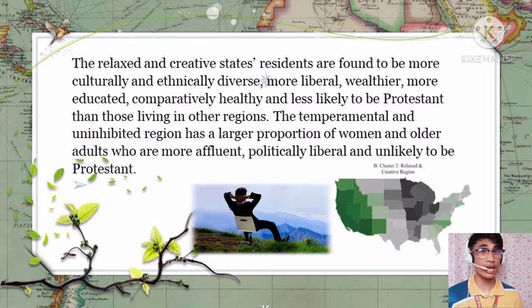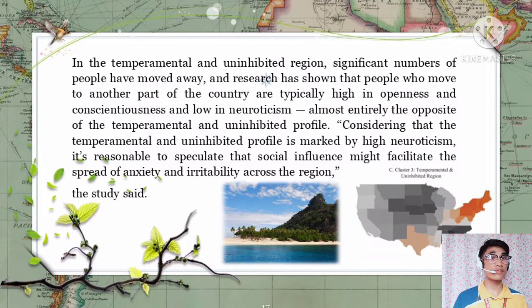For instance, research has shown that agreeableness is a trait often found in people who stay in their hometowns, and a large proportion of residents in the friendly and conventional region lived in the same state the year before. The relaxed and creative region may have been influenced by a frontier mentality, with lots of young people, professionals, and immigrants moving to the region for educational and employment opportunities. In the temperamental and uninhibited region, significant numbers have moved away; people who move to another part of the country are typically high in openness and conscientiousness and low in neuroticism — almost entirely the opposite of the temperamental and uninhibited profile.